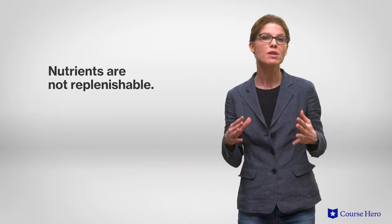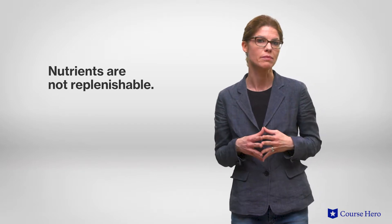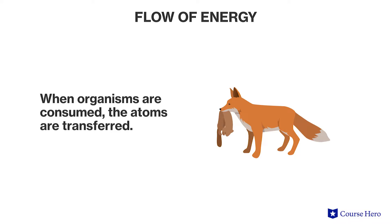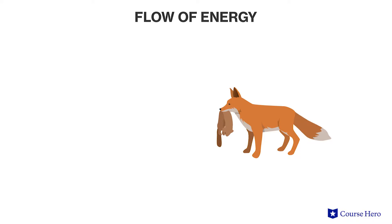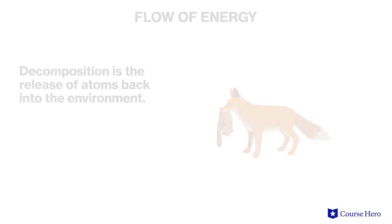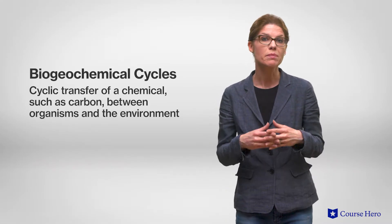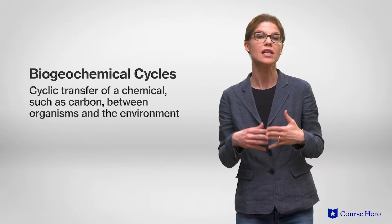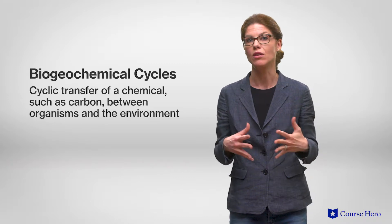Nutrients, on the other hand, are not replenished, so they must be recycled in an ecosystem. Atoms from the air, water and soil are taken up by organisms and incorporated into their bodies. When an organism is consumed, the atoms are transferred to the body of the consumer. Eventually, the atoms are released back into the environment through excretion or decomposition. Organisms and the environment pass the atoms back and forth in what are known as biogeochemical cycles.